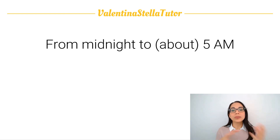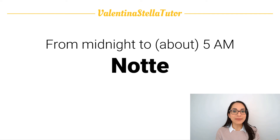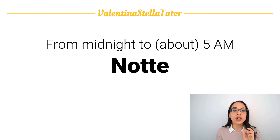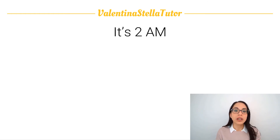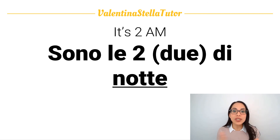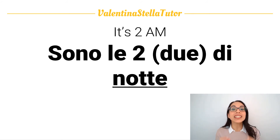From midnight to around 5 AM we have 'notte.' That's how long night is in Italian — it goes from midnight to around the moment the morning starts. Repeat: notte. So if you want to say 'it's 2 AM' — in English you say 'it's 2 in the morning,' but we don't. We say 'sono le due di notte,' because technically night goes from midnight to 5 AM. Repeat: sono le due di notte.